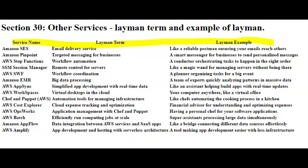AWS Cost Explorer is like a financial advisor for your cloud expenses. It helps you understand where your money is going in the AWS cloud by providing clear and visual insights into your spending. Think of it as a tool that helps you keep track of your cloud costs and make informed decisions to optimize spending.